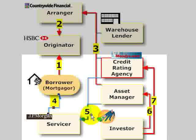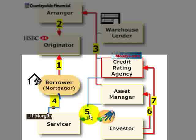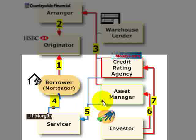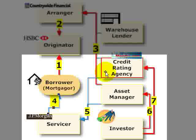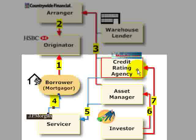The fifth friction is between the servicer and third parties, in particular the asset manager and the credit rating agencies. Moody's has estimated that servicer quality can affect the level of losses by plus or minus 10%. There is a friction between the servicer and the credit rating agency because the accuracy of the credit rating placed on securities issued by the trust is vulnerable to the use of a low-quality servicer.